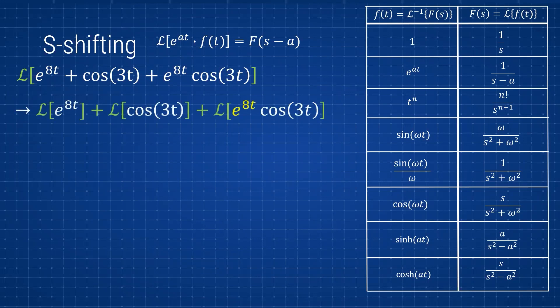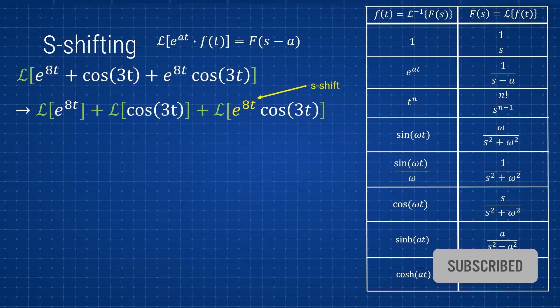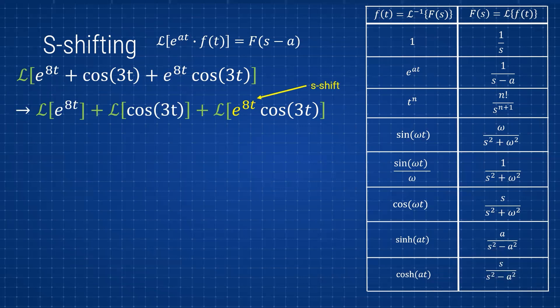The Laplace of the whole expression is the same as taking the Laplace of each term individually. You can see the last function — e^(at) — is highlighted in yellow because we're taking the Laplace of an exponential times a cosine. That's why I put it in a different color: this is what is known as an s-shift. If we are taking the Laplace of an exponential times a function of t...